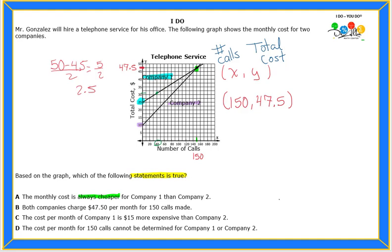It's very important that we know how to read the labels. So no, A is not right. What about letter B? It says both companies charge $47.50 per month for 150 calls made. Yeah, that's the number that we have right here. So this is true, and that's what I'm looking for—a true statement.